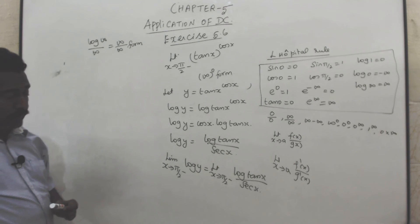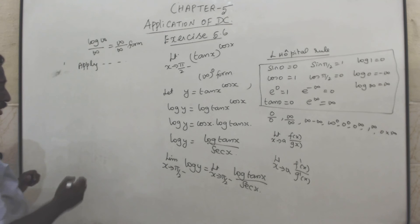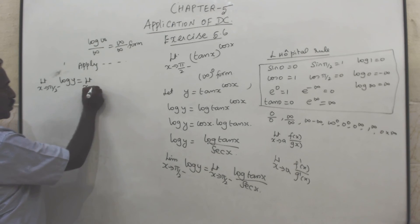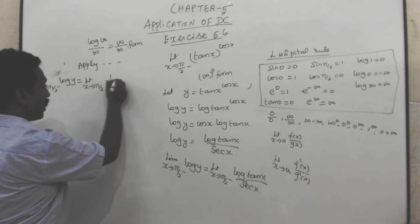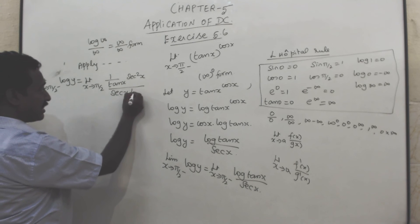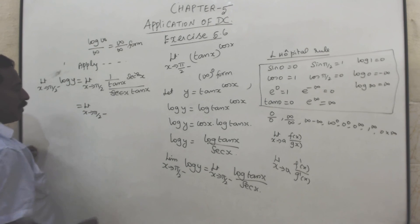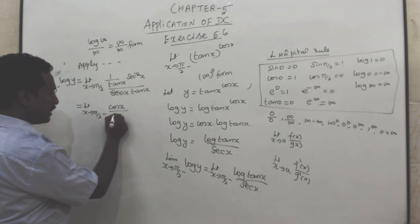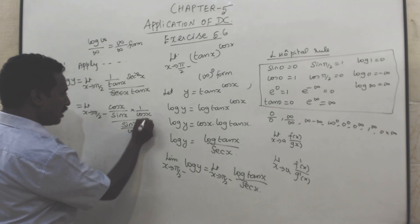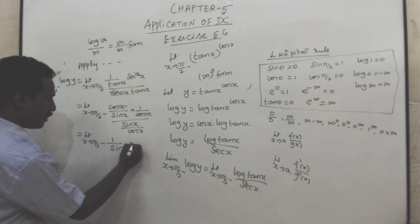Applying L'Hôpital's rule: limit x tends to π/2 minus of log y equals limit x tends to π/2 minus of: differentiation of log(tan x) is 1 by tan x times sec²x, and differentiation of sec x is sec x times tan x. One sec and sec cancel. Then 1 by tan x is cot x, which is cos by sin, and sec means 1 by cos, tan is sin by cos. Simplifying: limit x tends to π/2 minus of cos x by tan x.